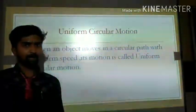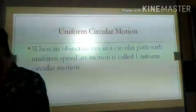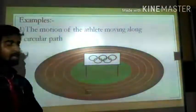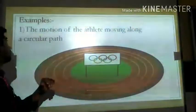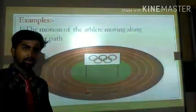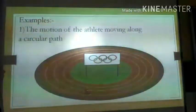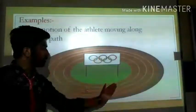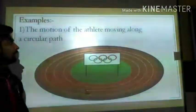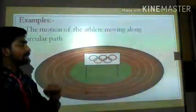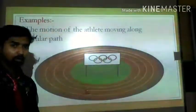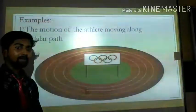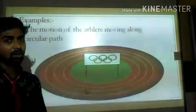Now let's see some examples. The first example is the motion of an athlete moving along a circular path. This is a circular path and an athlete is moving along it. So the motion of this athlete is Uniform Circular Motion.